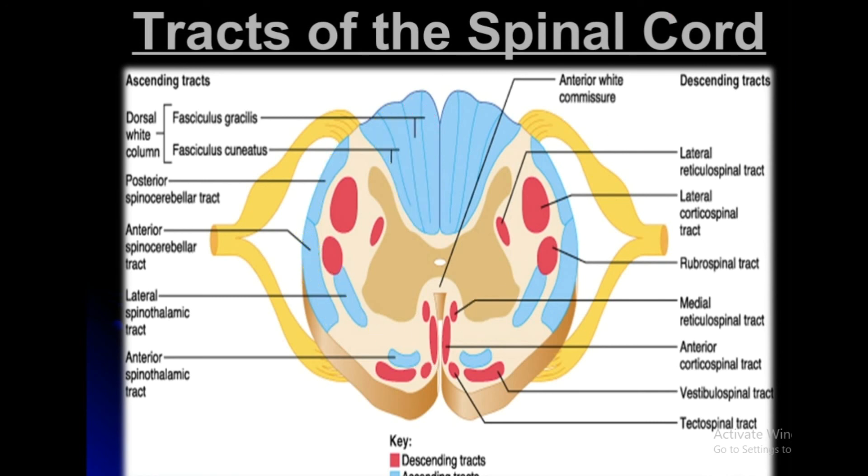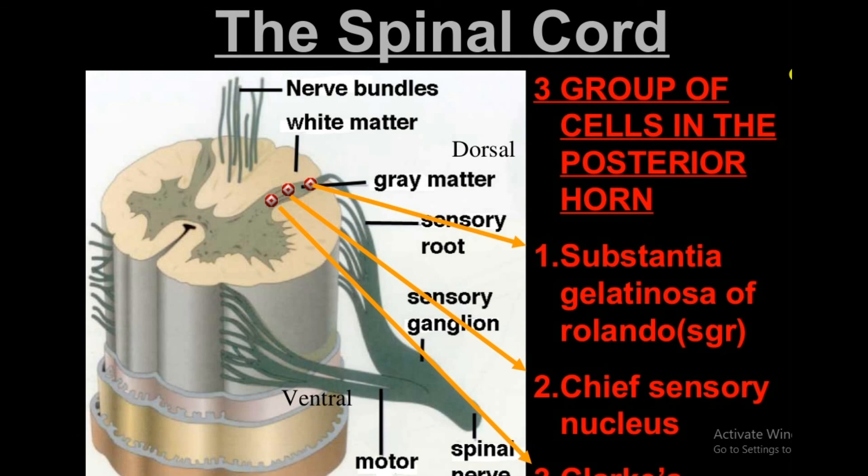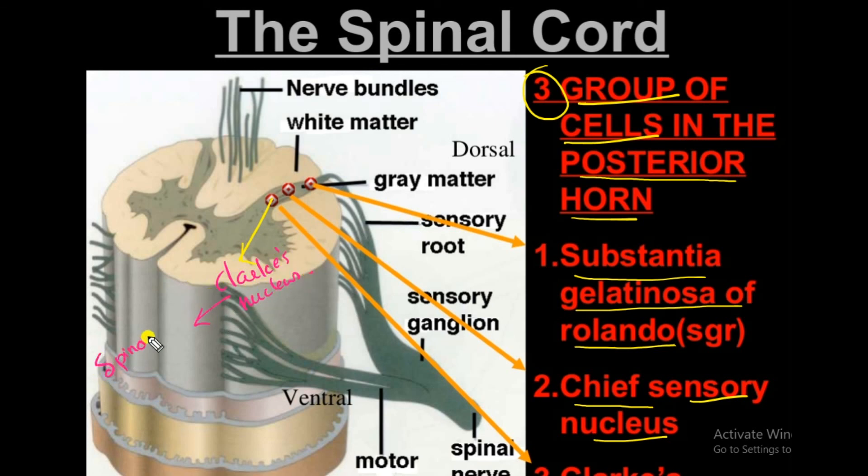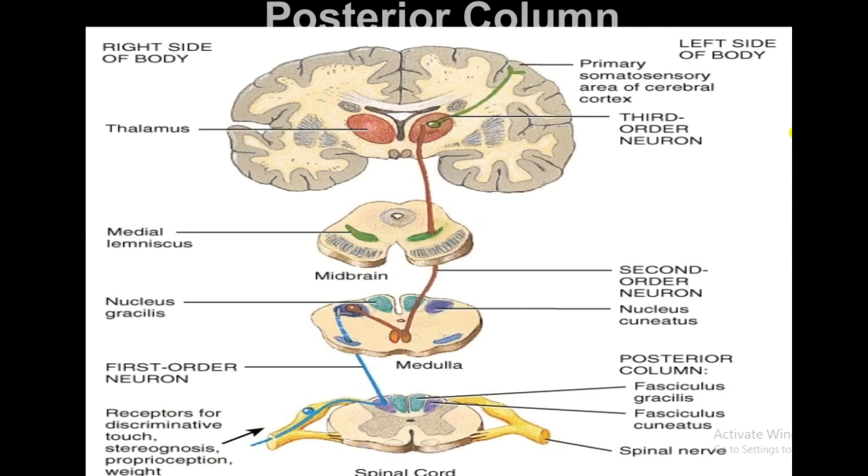Three groups of cells in the posterior horn: substantia gelatinosa of Rolando, chief sensory nucleus, and the third one is Clarke nucleus. The spinocerebellar tract synapse here. Cuneatus synapse here. Clarke nucleus is specific for spinocerebellar tract.